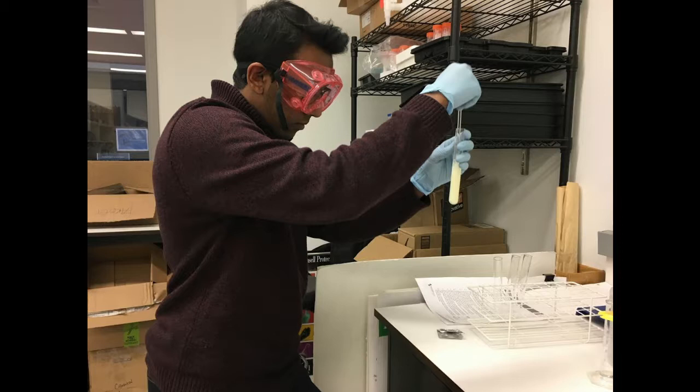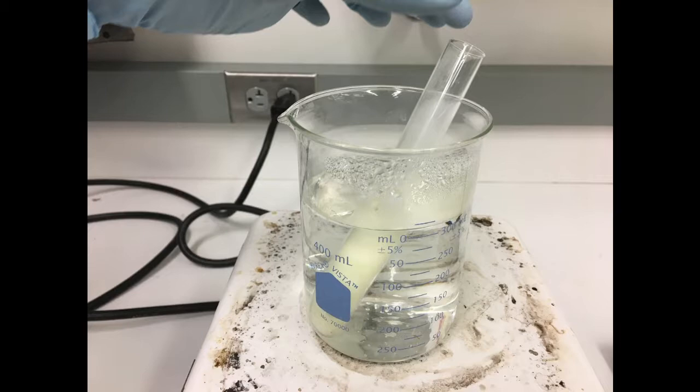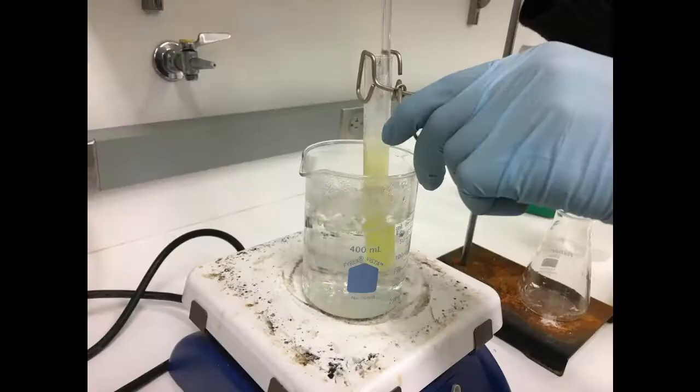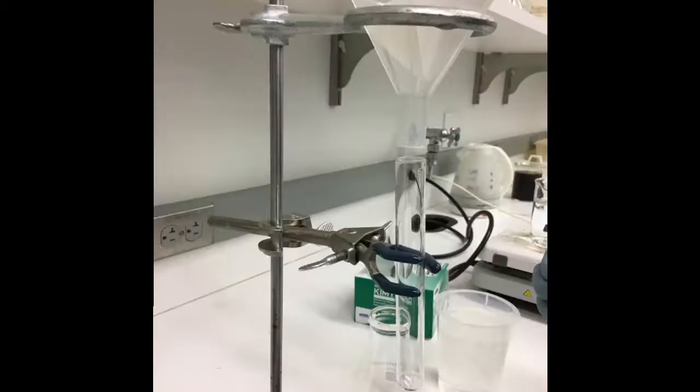Make sure to mix the test tube contents either by vortexing or, in this case, a glass stirring rod. Once you mix the contents of the test tube, place it into a hot water bath while it is heating to a boil. Frequently stir the solution with a glass stirring rod in the test tube while it is being heated.